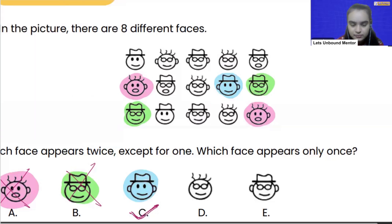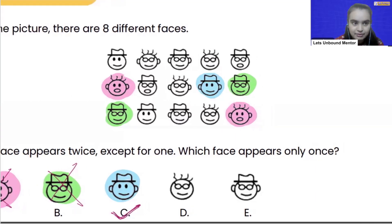as well. See, for example, if we check the face which is in option D, we are having it here and we are having it here. So it occurred twice, so this is also not the correct answer. And if